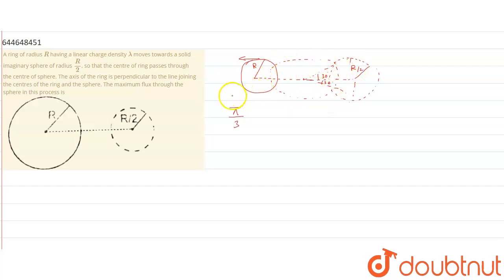So, that is why pi by 3 into R is the length and if we multiply, it will be with lambda. It will be a charge in closed surface, right? So, maximum flux will be equal to pi R lambda upon 3 epsilon not which is the right answer for the given question.